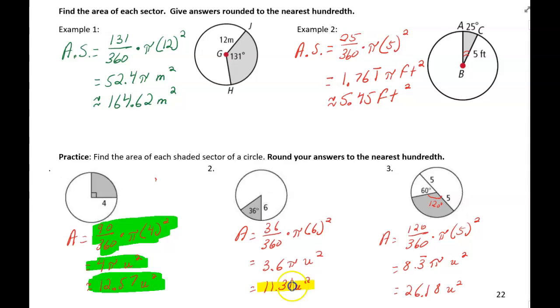For number two, you can see the highlighted answer in yellow is the decimal. And for problem number three, you first had to find 120 degrees. You needed to do that by doing 180 minus the 60. So that's how I got the central angle of 120.